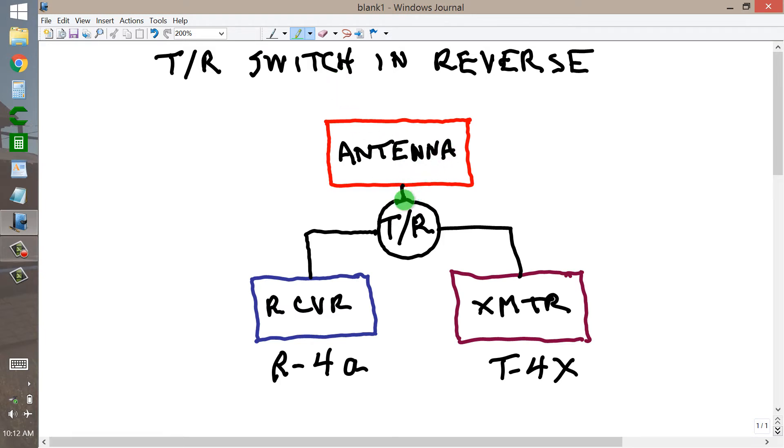The feed line, shown right here between the TR switch and the antenna, as well as the feed lines or the connecting lines between the TR switch and the transmitter and the TR switch and the receiver, are coaxial cables, 52 ohm coax. This antenna might include a transmatch in the line, but not necessarily.